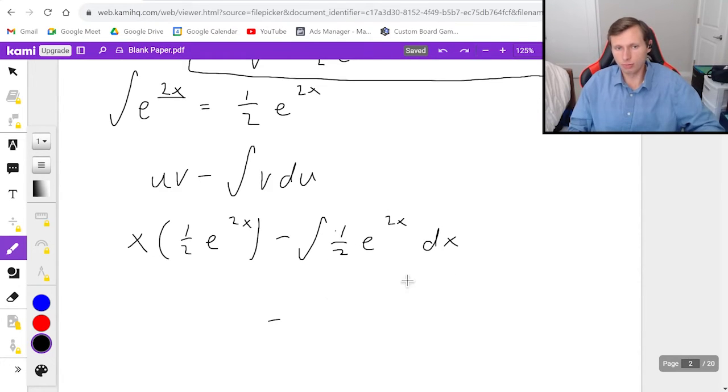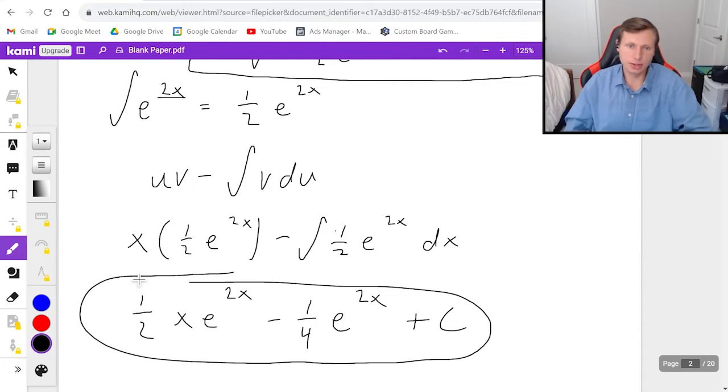So 1 fourth e to the 2x. And again, a lot of that I did in my head, but I did a u substitution. And if you do the u substitution, you should get the same answer as me. Do I recommend memorizing some of these easy integrals? Yes I do, or at least the rules for them. And then the first part, I'll just rewrite and simplify: 1 half x e to the 2x. And then stick a plus c at the end there. And there's our answer. There's our integral. So that's it for that first one.